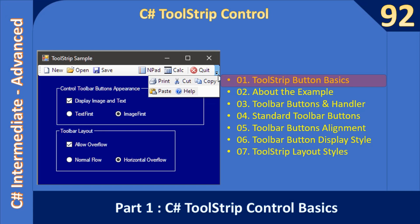Hello friends, welcome to the C# intermediate to advanced tutorial. In this sub-series we are going to look at the ToolStrip control and how to add toolbar buttons into it. First we will look at toolbar basics, then we will see an example, and then we will continue and start implementing the sample application.